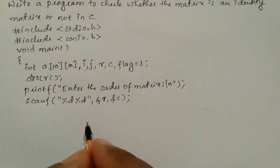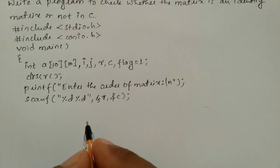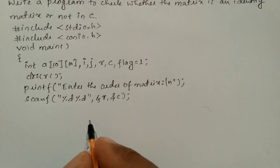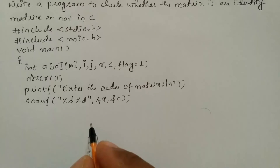Here we have to check the condition. Whenever I say identity matrix, the principal diagonal of the matrix must have element value one and all other elements must be zero. Such a matrix is called an identity matrix.